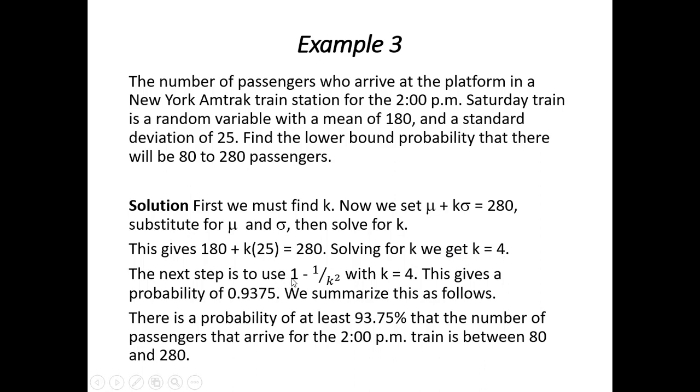We go back to our 1 - 1/k² formula with k is 4. So this would end up giving us 1 - 1/4², or 1 - 1/16. When we simplify that, we get a probability of 0.9375. Summarizing all of this, we can say there's a probability of at least 93.75% that the number of passengers that arrive for the 2 p.m. train is between 80 and 280.